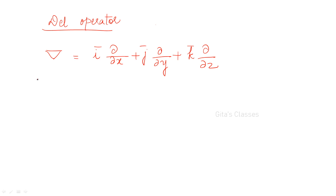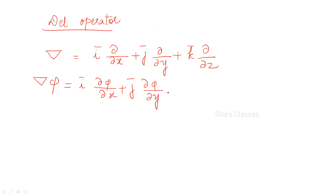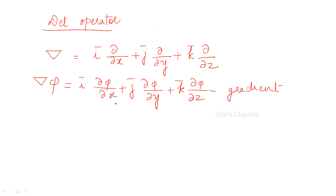This can be operated on a scalar point function phi(x, y, z). In this case, del phi equals i times ∂φ/∂x plus j times ∂φ/∂y plus k times ∂φ/∂z. This is called the gradient of the function phi(x, y, z) = c.